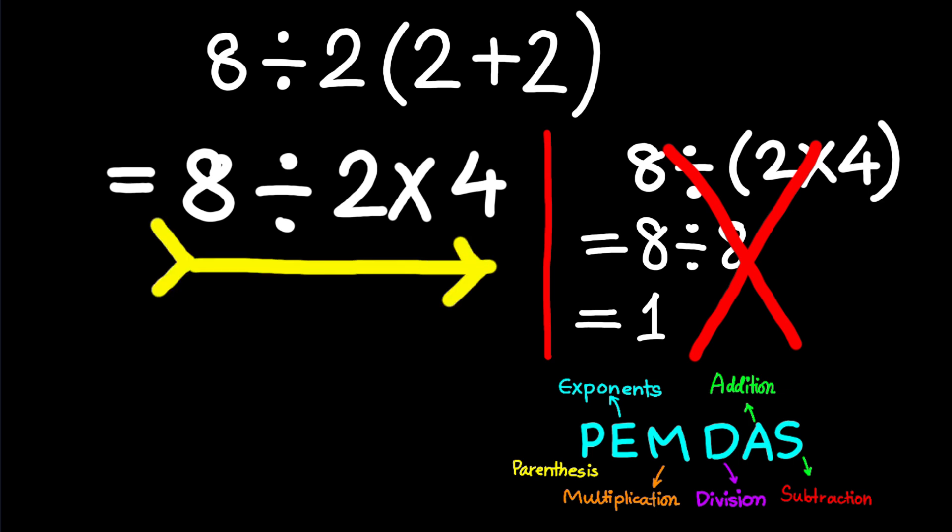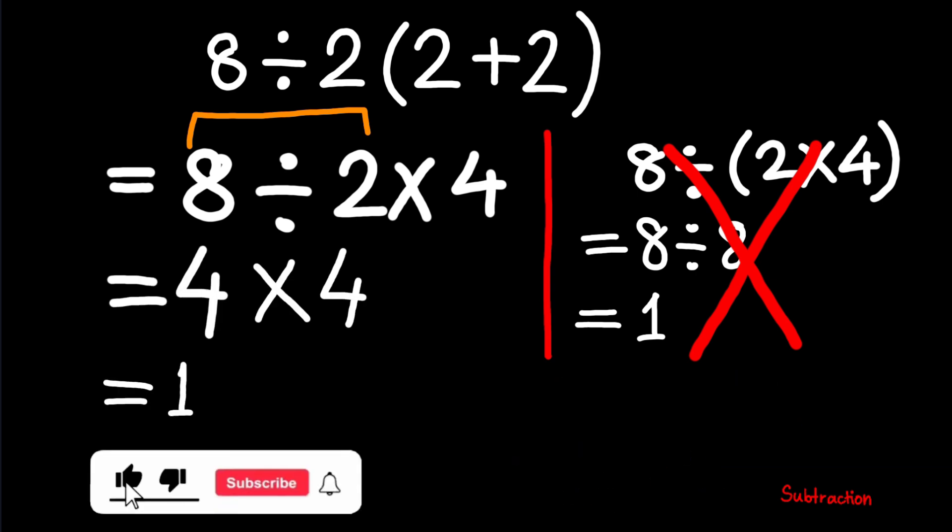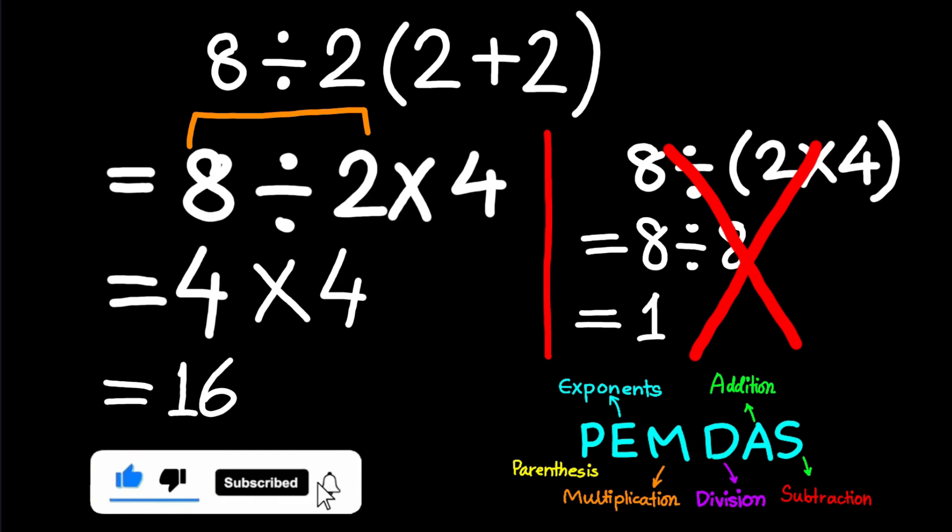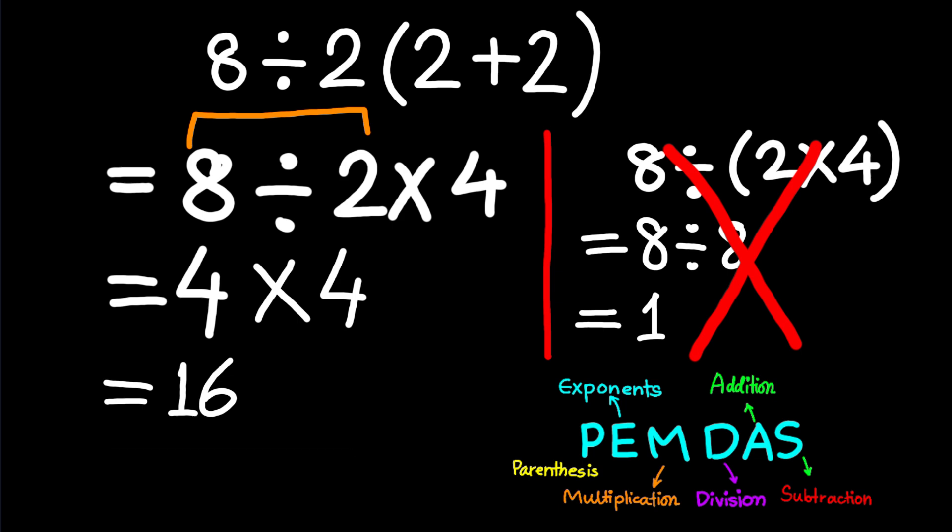Working left to right, first we do 8 divided by 2 equals 4, and then 4 times 4 equals 16. So the correct answer is 16, even though a lot of people mistakenly think it's 1.